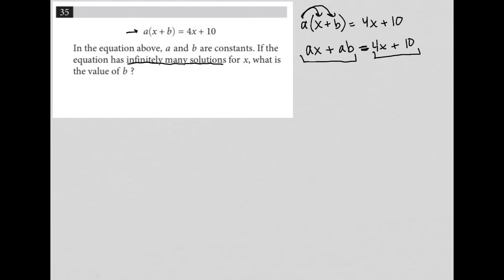So what do I mean by that? That means that this AX must be equal to 4X and this AB must be equal to 10. We need to have 4X plus 10 equals 4X plus 10 in order for this infinitely many solutions thing to work out. Infinitely many solutions means that it doesn't matter what X value you plug in, both sides of the equation will always equal each other. There are infinitely many solutions for X because both sides of the equal sign are the exact same thing.